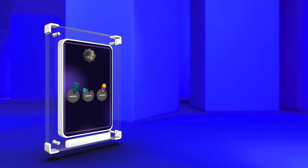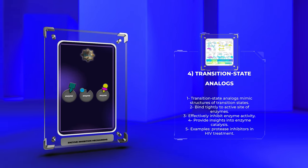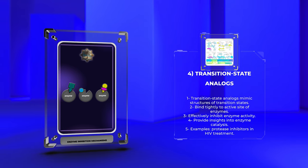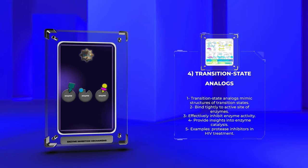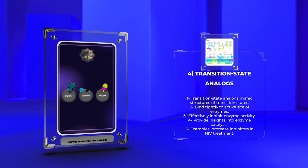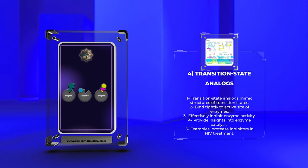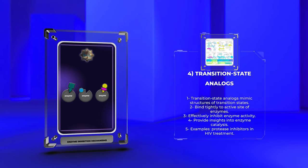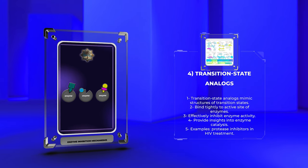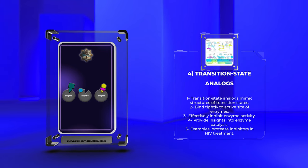Transition state analogs are compounds that mimic the structures of transition states occurring during enzymatic reactions. By exploiting the similarities between the transition state and transition state analog, these molecules can bind tightly to the active site of enzymes, effectively inhibiting their activity. Transition state analogs provide valuable insights into enzyme catalysis and are valuable tools for drug development. For instance, protease inhibitors used in the treatment of HIV mimic the transition state of peptide hydrolysis in the viral protease enzyme.